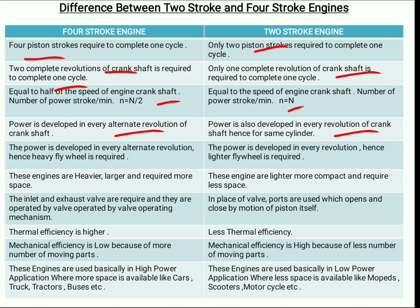In 4 stroke engines, because power is developed in every alternate revolution, a heavier flywheel is required. The flywheel is a device that absorbs energy during the power stroke and releases it during the rest of the strokes. Since we only get a power stroke every other revolution, we need to store more power, requiring a heavier flywheel. In 2 stroke engines, power is developed every revolution, so a lighter flywheel is required because less energy needs to be stored.